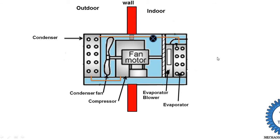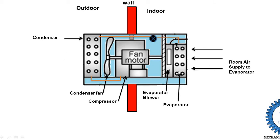Room air, which has a higher temperature, is supplied into the evaporator for cooling. This air is supplied directly to the front part of the evaporator. The blower rotates and sucks the room air — it is not naturally supplied. The evaporator contains low-temperature refrigerant, which absorbs heat from the air, reducing the air temperature. This cooled air then comes out from the front of the evaporator and is supplied to the room.